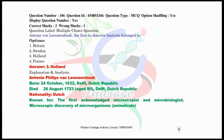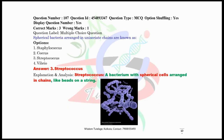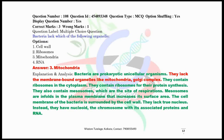Question number 106: Antonie van Leeuwenhoek, the first person who discovered bacteria, belongs to — the correct answer is Holland. Question number 107: Spherical bacteria arranged in uniseriate chains are known as streptococcus. Question number 108: Bacteria lack which of the following organelles? — obviously, mitochondria.